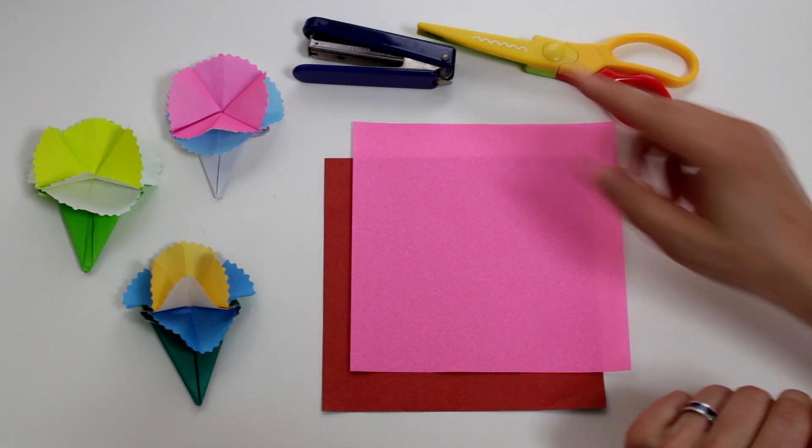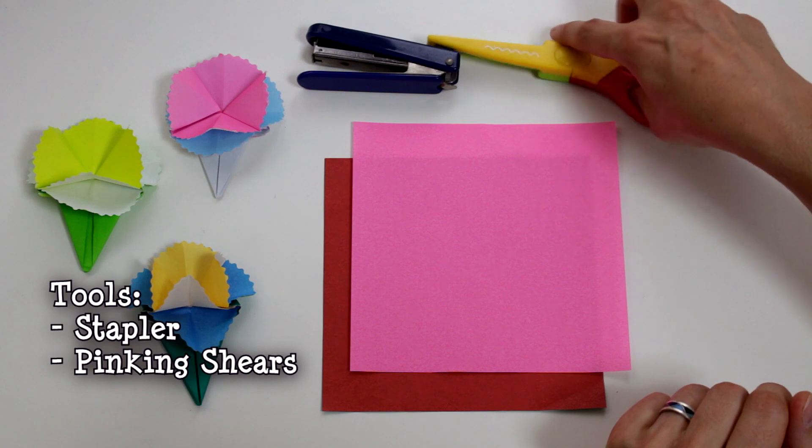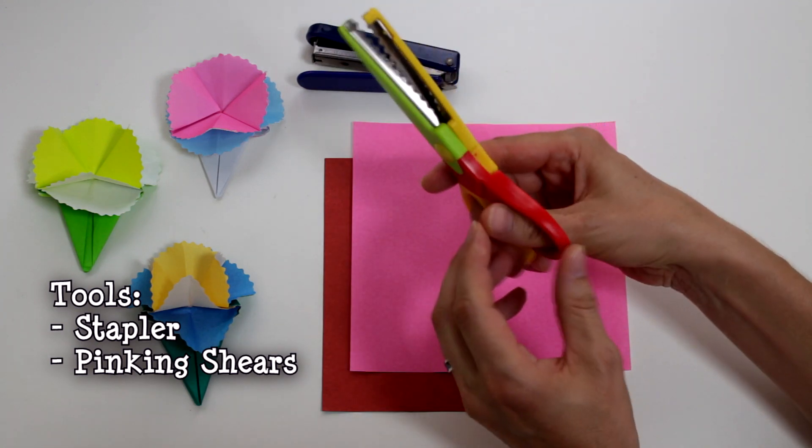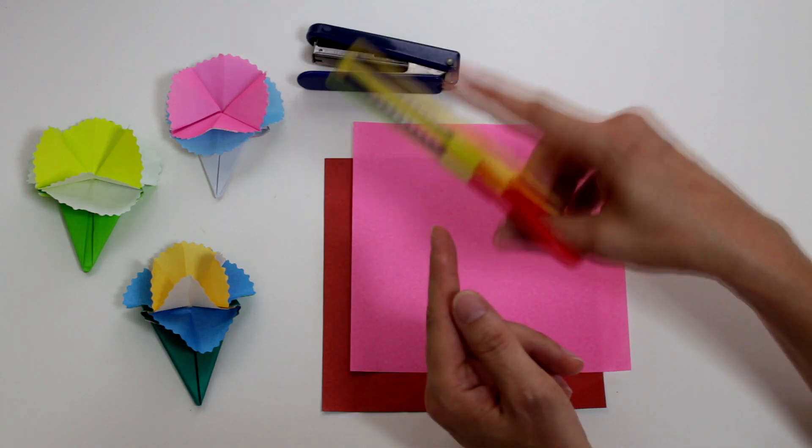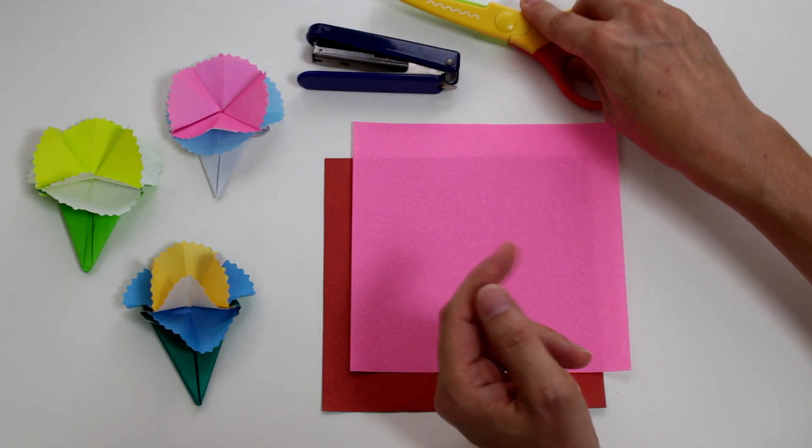For this model we're going to need a stapler and pinking shears. If you don't have pinking shears, please use some regular scissors and try to make a zigzag cut in the end.